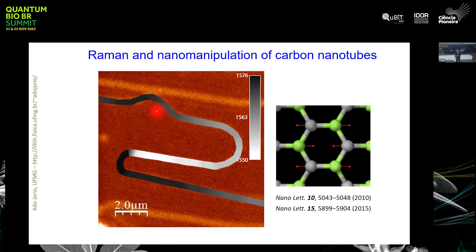Notice that we pushed the nanotube here, but the strain actually happens far away, not at the position where you pushed. This happens because of dynamics: when you push the tube, the strain is at that point, but when you release, that place recoils back while the far-away position does not. This gradient in strain gives you a way to measure the interaction between the tube and the surface.